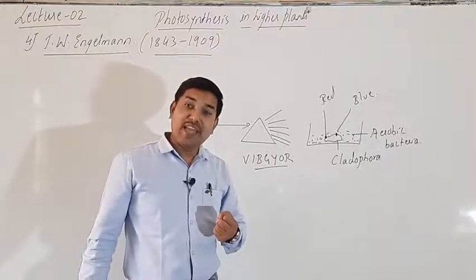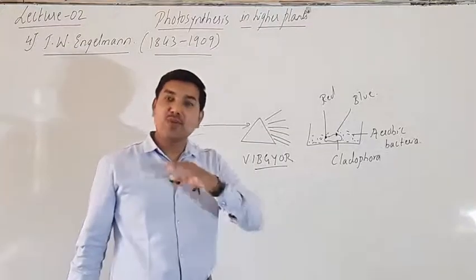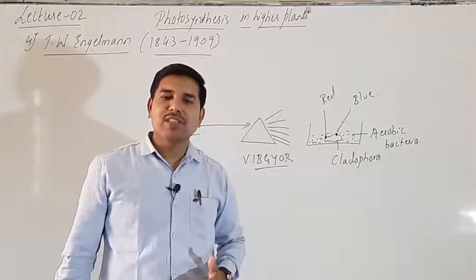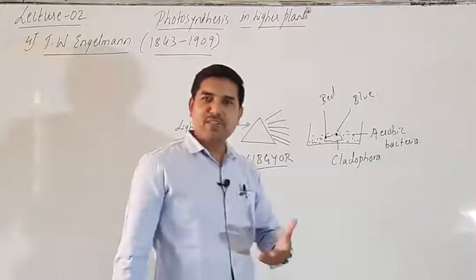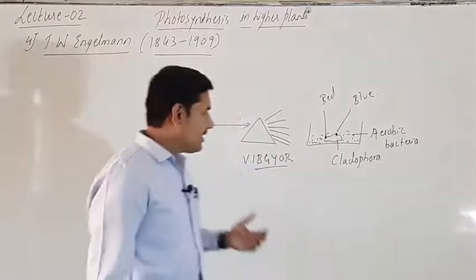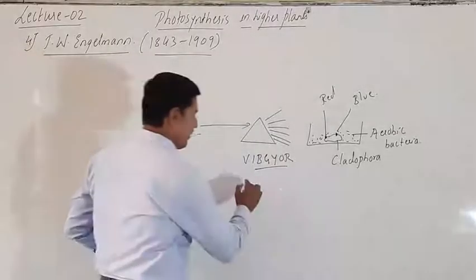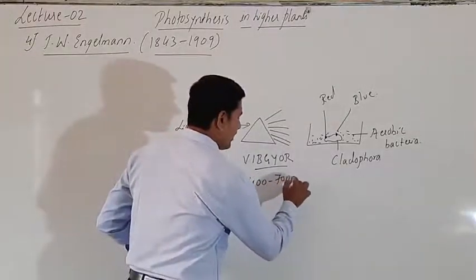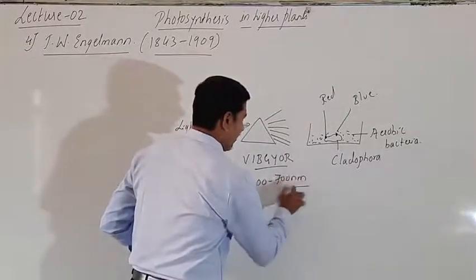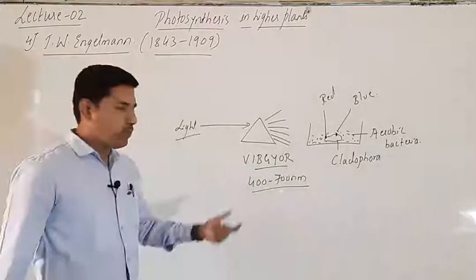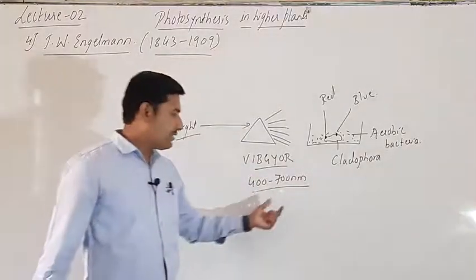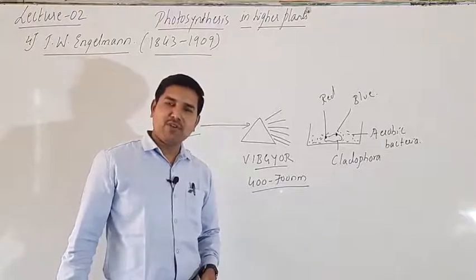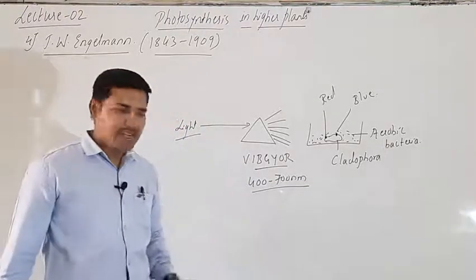For the process of photosynthesis, the visible spectrum ranges between 400 to 700 nanometer wavelength of light. VIBGYOR lies between 400 to 700 nanometers — we call it the visible spectrum of light. Only within this wavelength range does photosynthesis occur in plants. Below this and above this wavelength, it does not help in the process of photosynthesis.